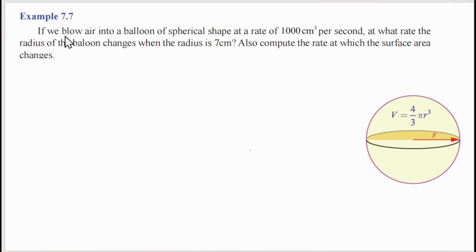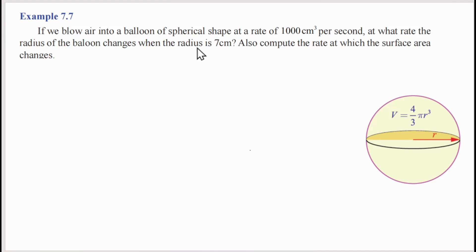If we blow air into a balloon of spherical shape at a rate of 1000 cm³ per second, at what rate does the radius of the balloon change when the radius is 7 cm? Also, compute the rate at which the surface area changes.